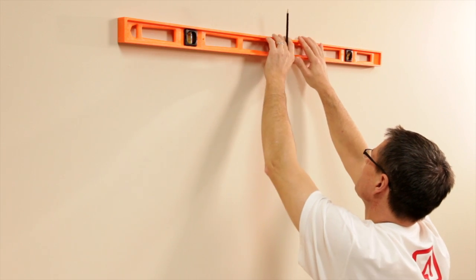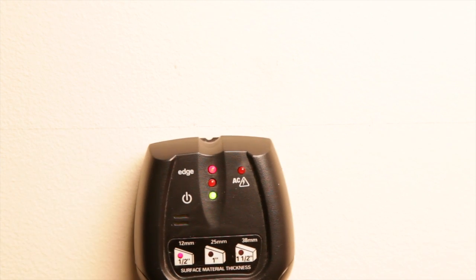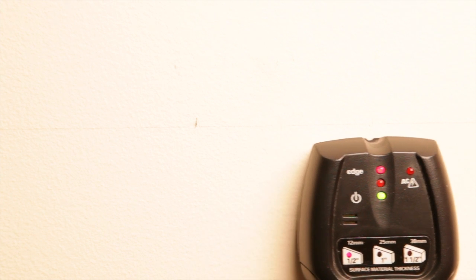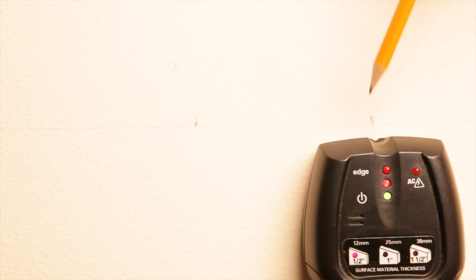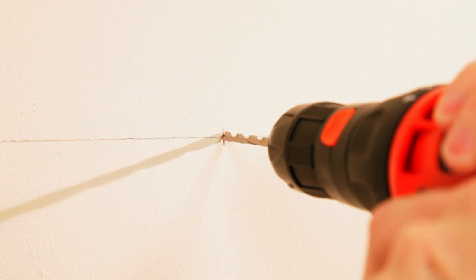Studs are typically 16 inches apart centre to centre. To find the studs, move the stud finder along the wall until you hear a tone. Continue along the wall until the tone stops. Mark the centre between the beginning and end of the tone. Make a vertical mark to indicate the centre of each stud along the line.